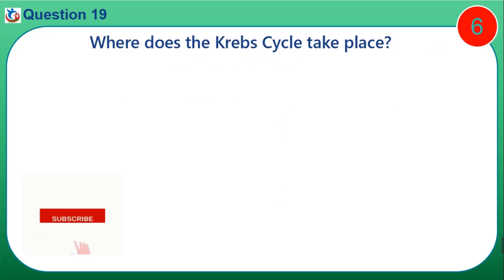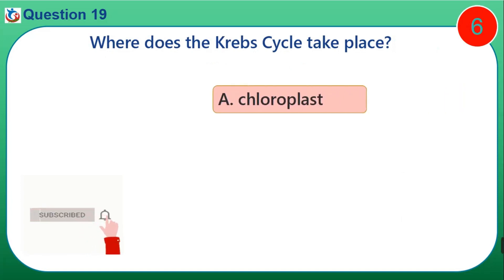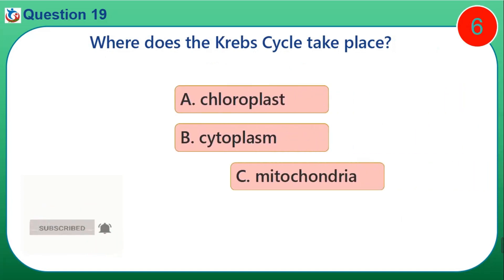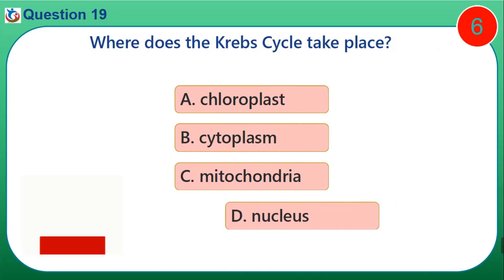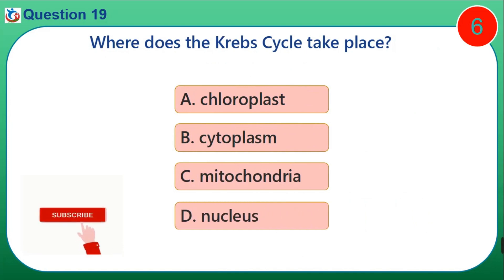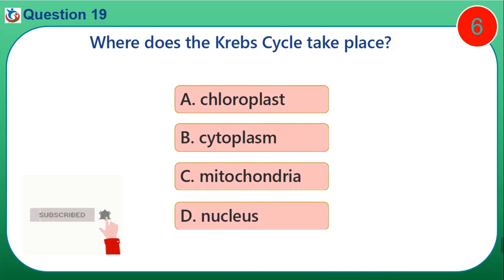Question 19. Where does the Krebs cycle take place? A. Chloroplast. B. Cytoplasm. C. Mitochondria. D. Nucleus.